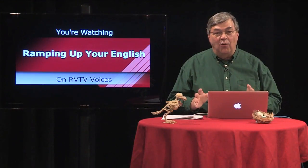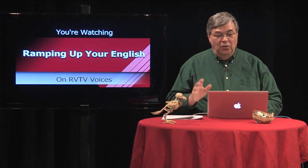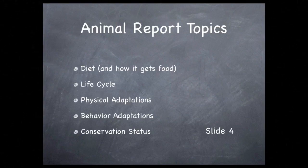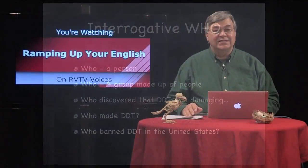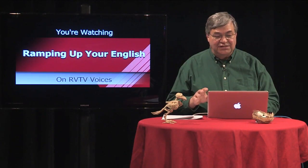Now, these six words are powerful for asking questions. Let's look briefly at the outline for the animal report. We want an animal's description, its classification, its range and distribution. We also want its diet, life cycle, physical and behavior adaptations, and conservation status. As we begin segment three of episode 72, let's see which interrogative best fits each of these tasks.